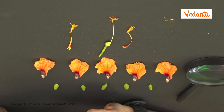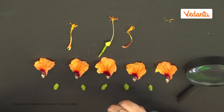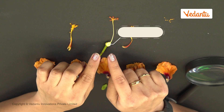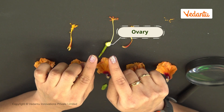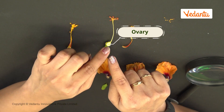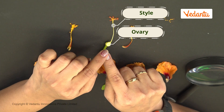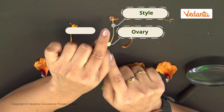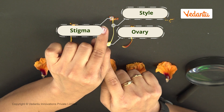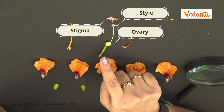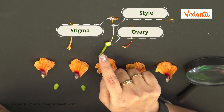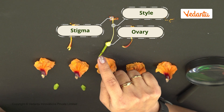The pistil, on the other hand, has three parts. The one at the bottom is the ovary. The style, which is like the neck. And the stigma, which is the slightly sticky part on the top.